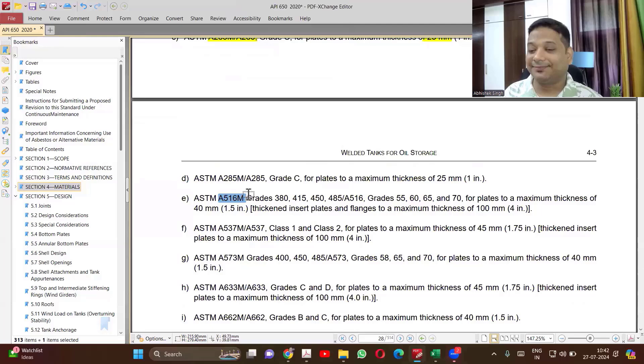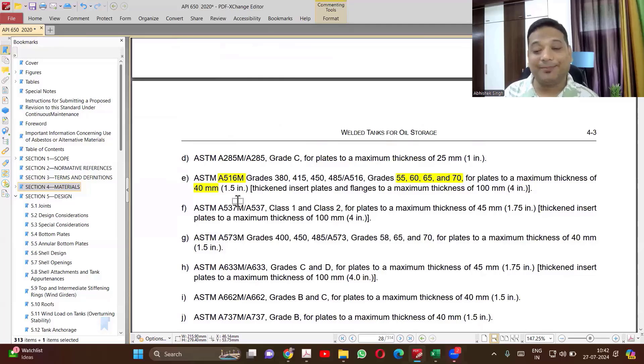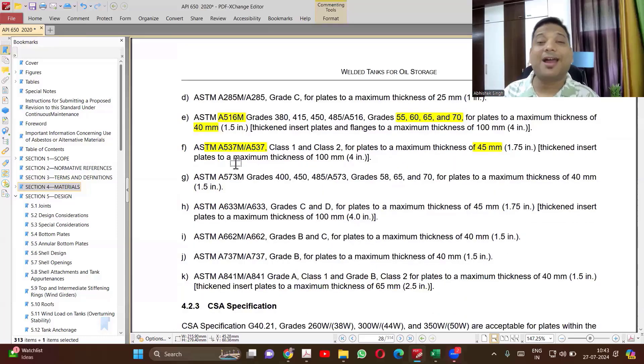For 516, for different grades, the maximum limit is again 40 mm. For 516 also, you are not allowed to exceed 40 mm. Now you will see 537. It is a very high strength material compared to others. So class 1 and class 2, if you are following this material, then you can go up to 45 mm. This is a common material for high strength. When your thickness is exceeding, very high thickness you are working, then by using 537, you can reduce some of the thicknesses. The total tonnage can be reduced.